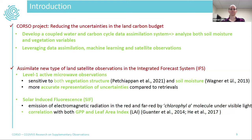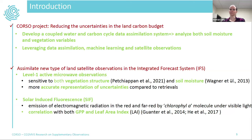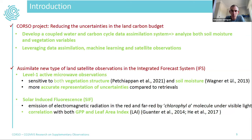Our strategy is to leverage data assimilation, machine learning, and new types of satellite observations. These new observations are level-one active and passive microwave observations — the goal is to move from retrievals to observations closer to the instrument measurement, because we can have better sensitivity to different variables in the model, such as vegetation structure, LAI, and soil moisture, and we get a more accurate representation of uncertainties.